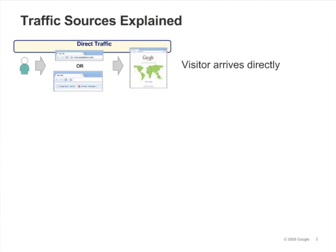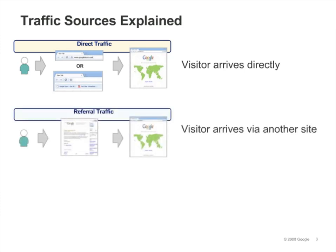Direct traffic represents visitors who clicked on a bookmark to arrive at your site, or who typed the URL directly into their browser. Referring sites include any sites that send traffic to you. These could be banner ads, or links featured on blogs, affiliates, or any site that links to your site.